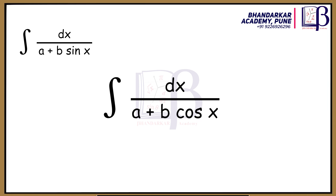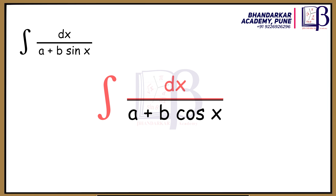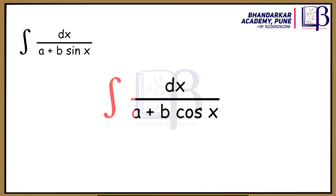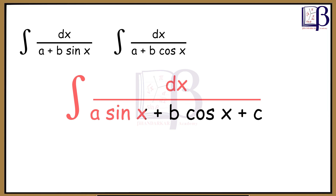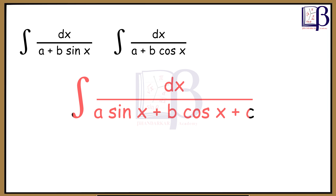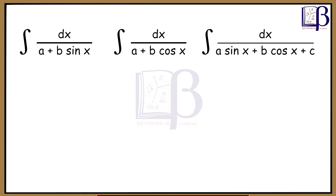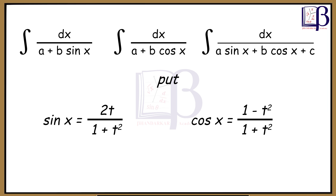Integration of dx upon (a + b sin x), or integration of dx upon (a + b cos x), or integration of dx upon (a sin x + b cos x + c). Use the substitution: sin x = 2t/(1 + t²), cos x = (1 − t²)/(1 + t²), where t = tan(x/2).